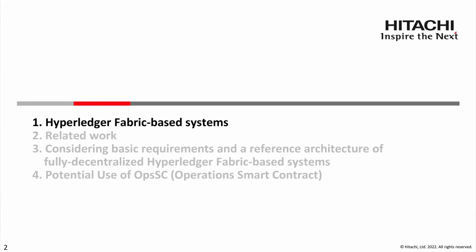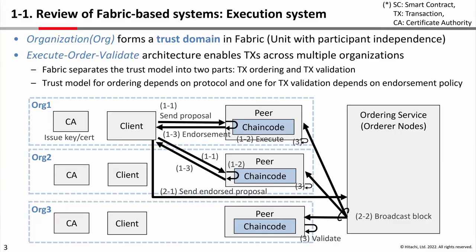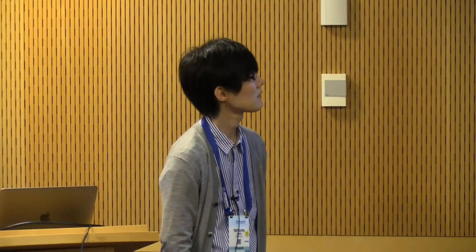Okay, first let's briefly review fabric-based systems. This slide explains the execution system of a fabric-based system, and here is an overview. Each organization forms a trust domain in fabric. In other words, an organization is a unit with participant independence. From version 1, fabric introduces an execute-order-validate architecture which enables transactions across multiple organizations with increasing scalability.